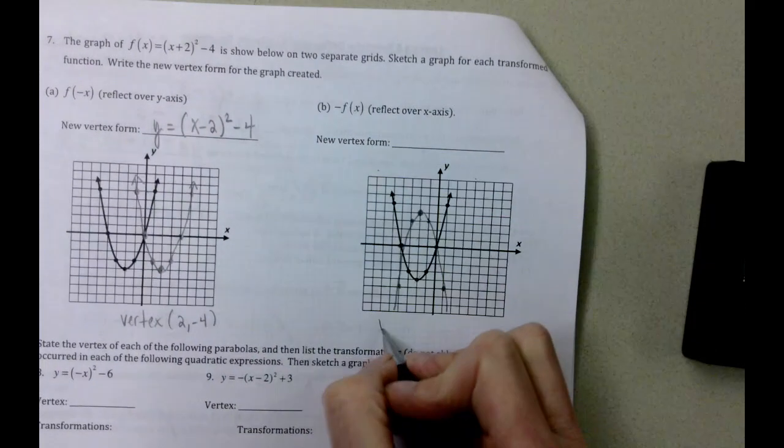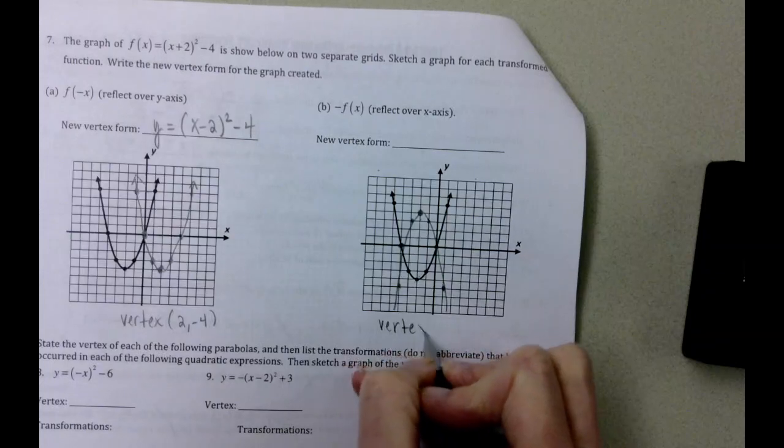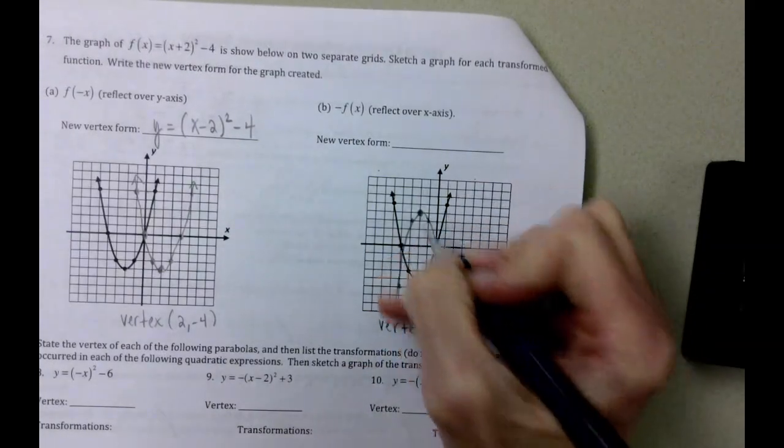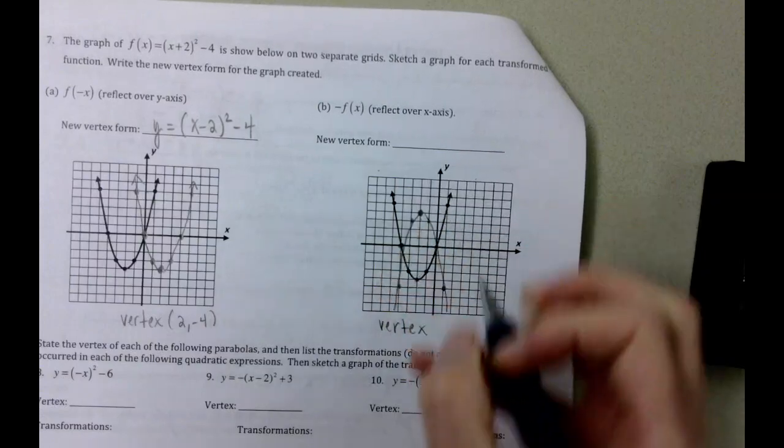But here comes our picture. Our vertex of our new graph here is (-2, 4).